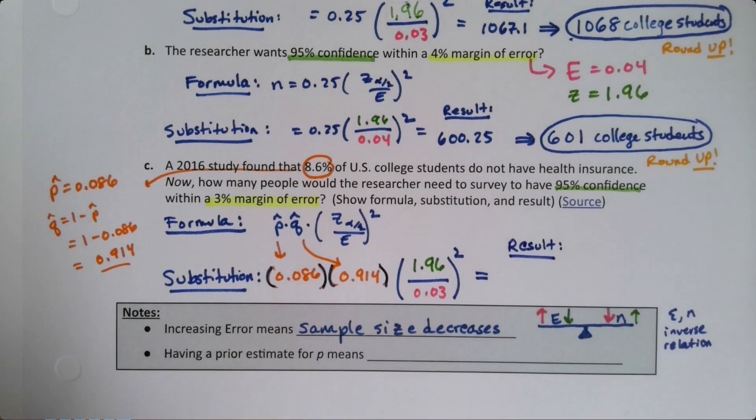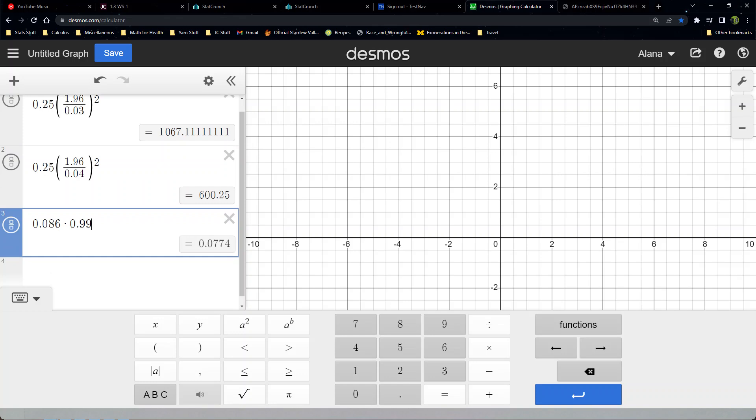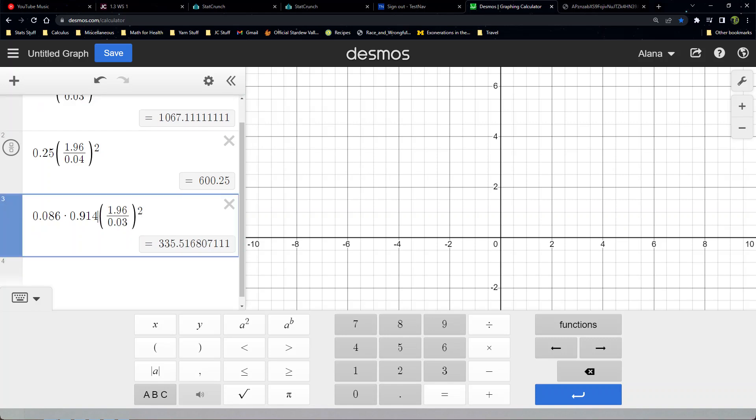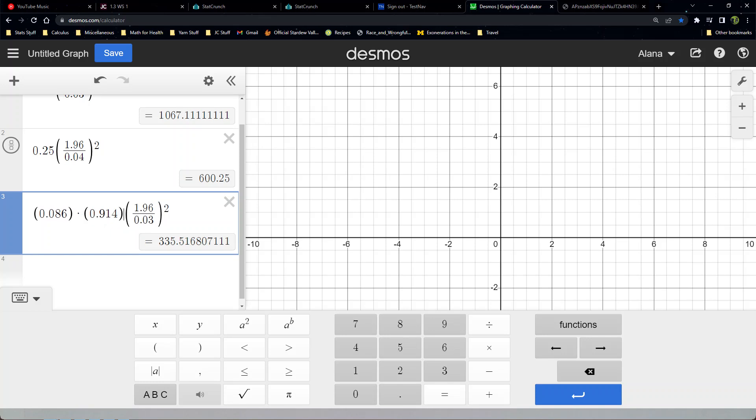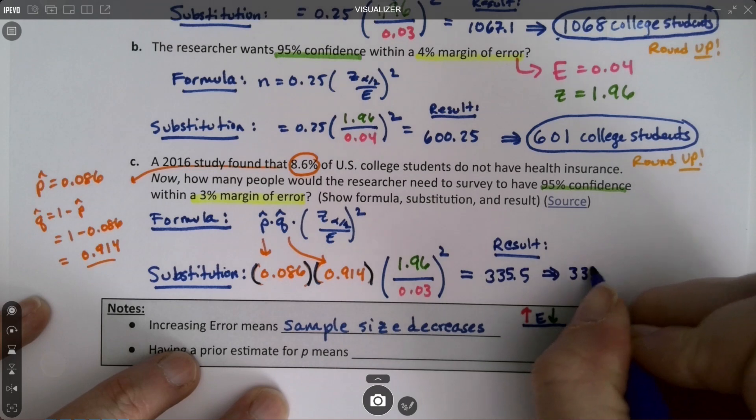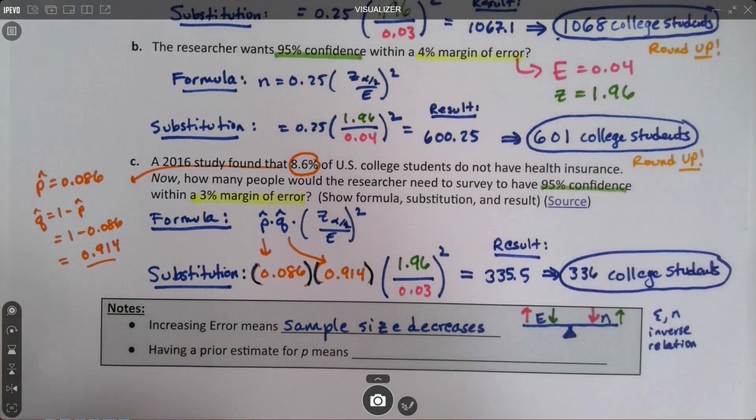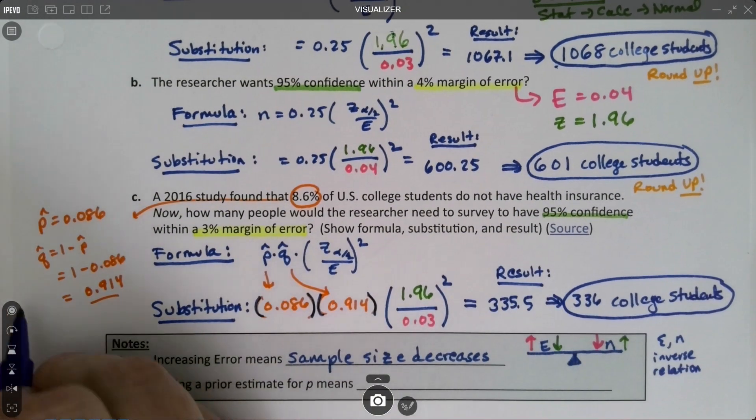It's 335.5, which would round up to 336 college students.